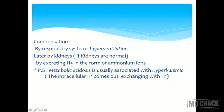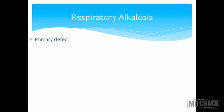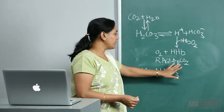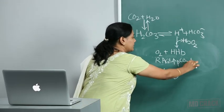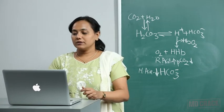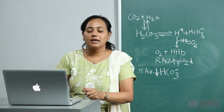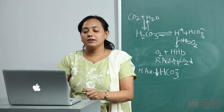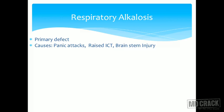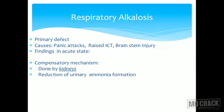Metabolic acidosis is usually associated with hyperkalemia due to ion exchange. Respiratory alkalosis has a primary defect of decreased pCO2. Causes include hyperventilation from panic attacks, raised intracranial tension, brainstem injury, or mechanical ventilator-induced hyperventilation. Findings: pH increases (alkalosis). Compensatory mechanism is done by the kidneys — reduction of urinary ammonia formation and increased excretion of bicarbonate.